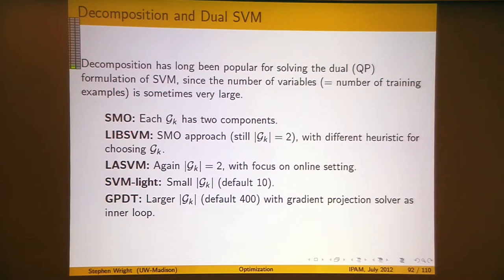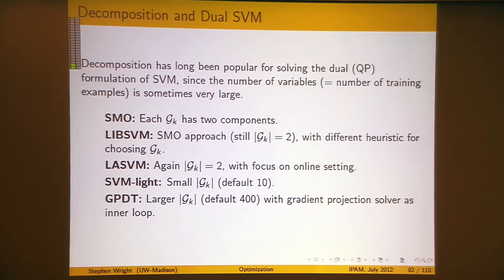There are variants and extensions of that approach where you explicitly pick some subset of size 10 or 400 and work on that subset of variables at any given time. All of these — if you Google these names — you'll come up with the appropriate references. Some of them date back to 1998 or so, some are more recent, but they're all methods of this type.